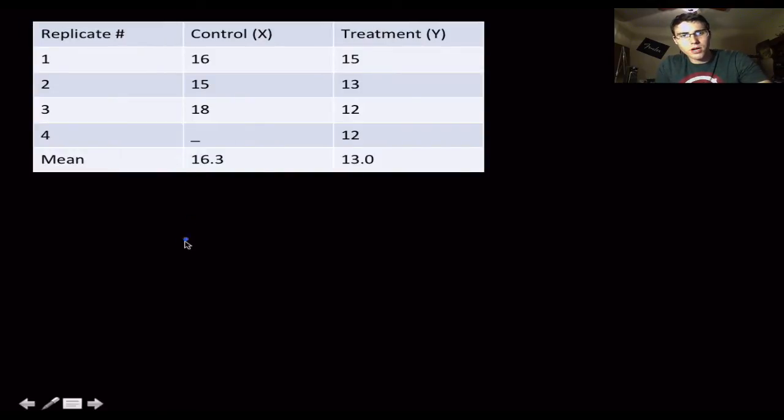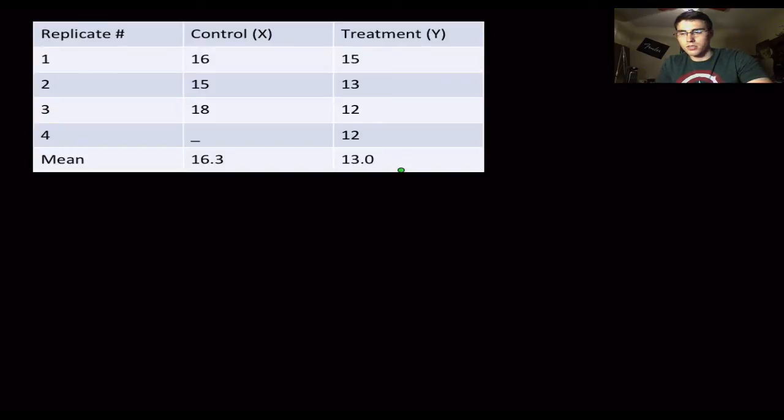Cool. So let's do an example, a practice problem here. And if you look at here, I'm going to do it on the next page, but here's your replicate number, 1, 2, 3, and 4. So we have four replicates for treatment y, and we have three for treatment x, or treatment y in our control group x. 16, 15, 18. The average is 16.3. 15, 13, 12, 12. And the average is 13.0. So moving on. Let's do a practice problem of what we just saw. Go back here and let's look at our data.